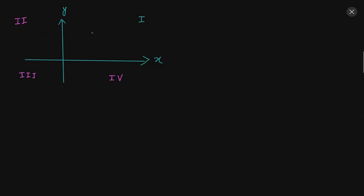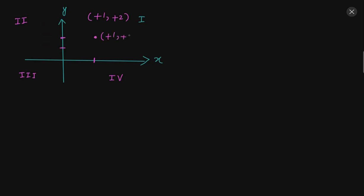Any point you represent in the first quadrant will be given plus-plus values — both x and y values will be positive. So if we write any x, y coordinates, both will be positive values. For example, plus one, plus two: this means we go one unit on the positive x-axis and two units on the positive y-axis, giving us the point (1, 2).